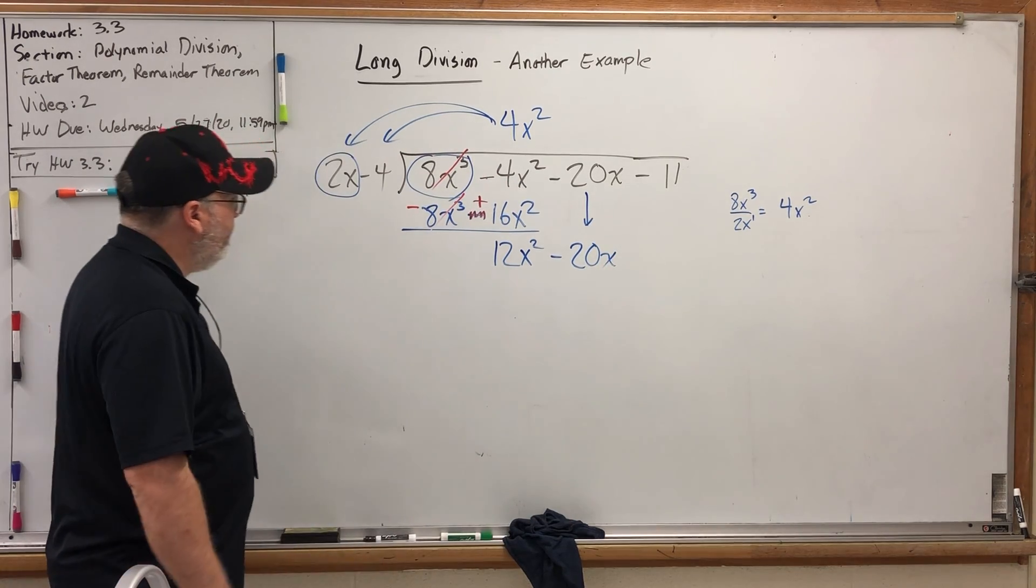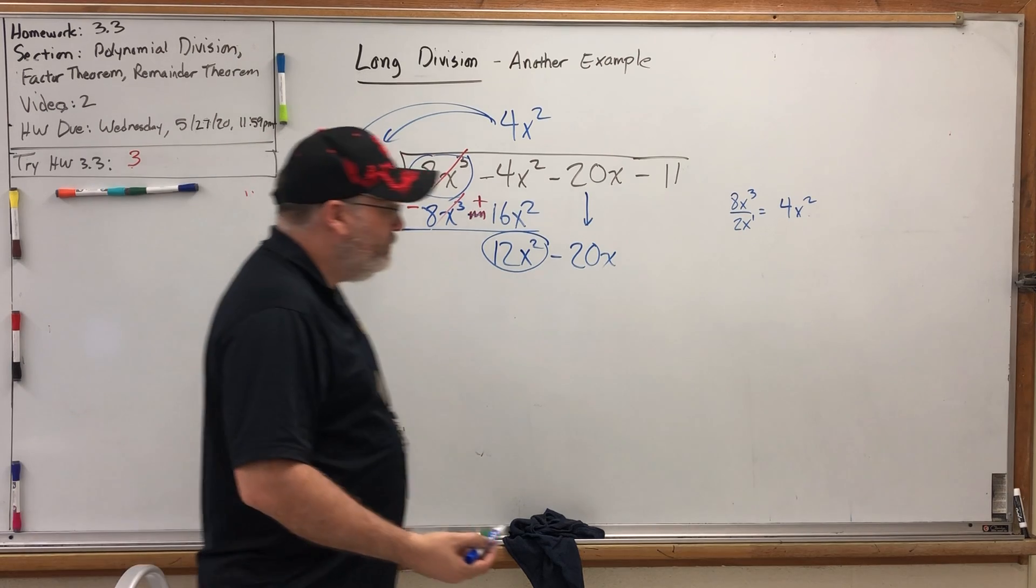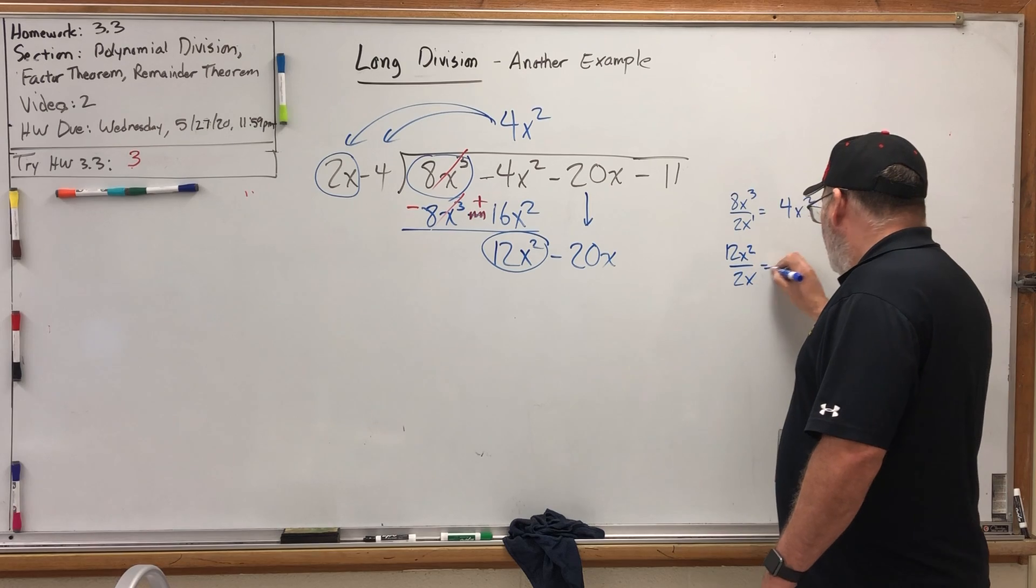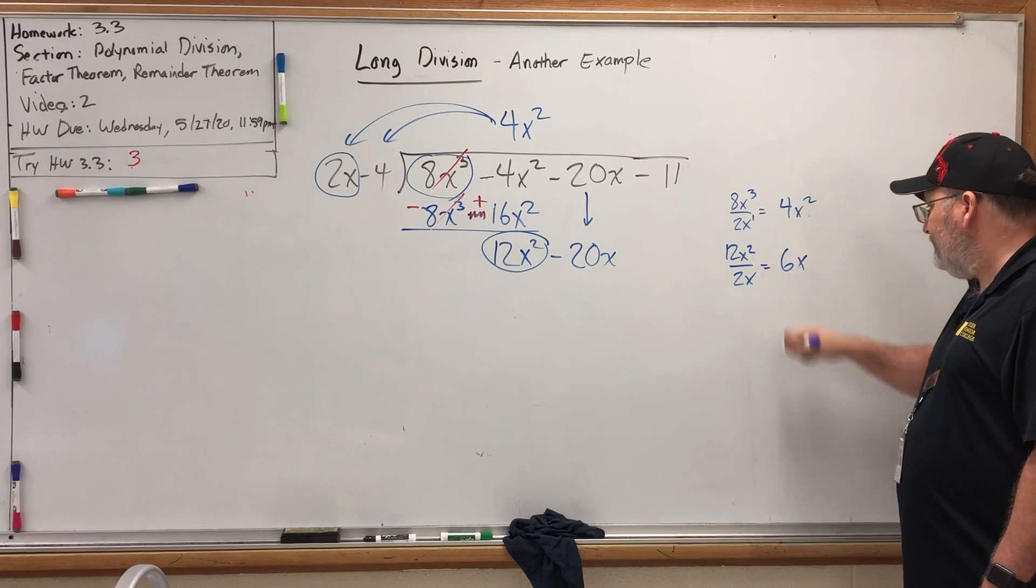And let's do it again. How many times does 2x go into 12x²? Well, if we put 12x² over 2x, 12 divided by 2 is 6. x² divided by x is x.